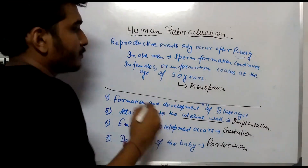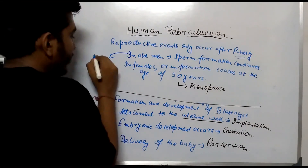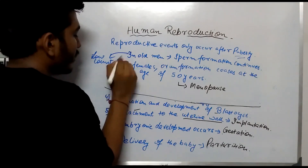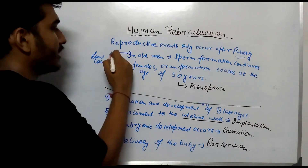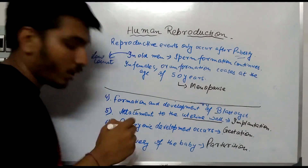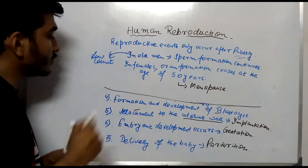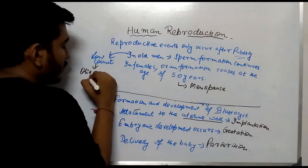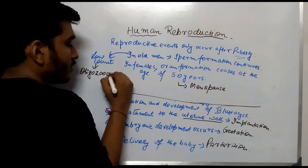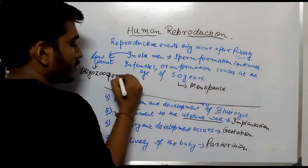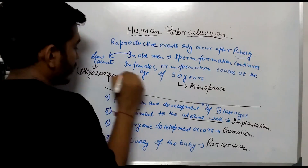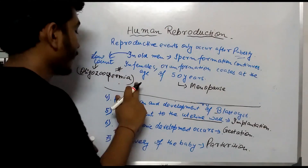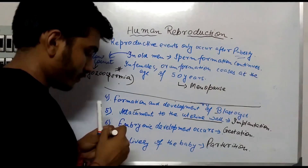Now in old men, sperm formation occurs, but it is in low count. This condition is known as oligozoospermia. This is outside of the NCERT, but from an exam perspective it is very important — oligozoospermia.